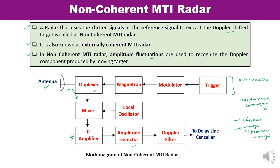The major advantage of non-coherent MTI radar is that its construction is very simple. It may be used in applications where space and weight are limited or are the major challenges and need to be optimized. Non-coherent MTI can be effectively used in those particular applications.